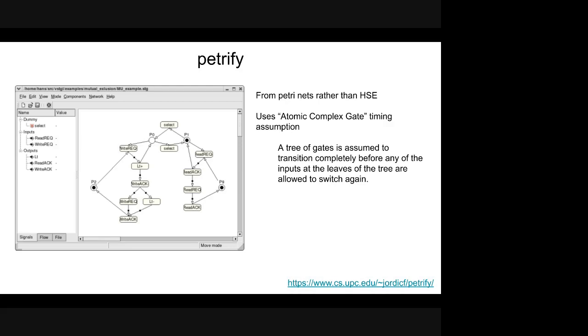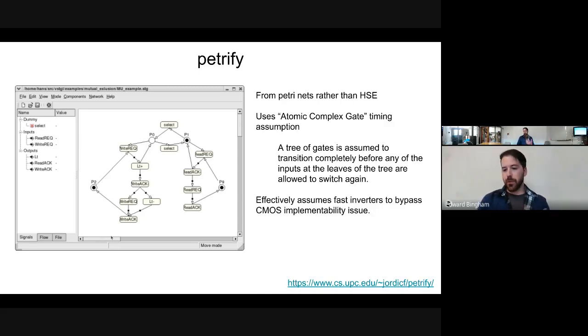In a certain way, with an isochronic fork, you're also drawing the box around terminals - around the output of a previous stage and inputs of two succeeding stages - and saying these all transition within, or simultaneously. So same kind of high-level way of specifying a timing assumption. This effectively assumes fast inverters and gets around the CMOS implementability issue, because you just stick inverters everywhere you might want them.